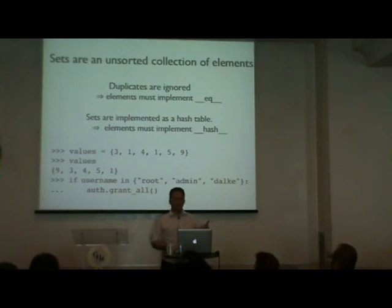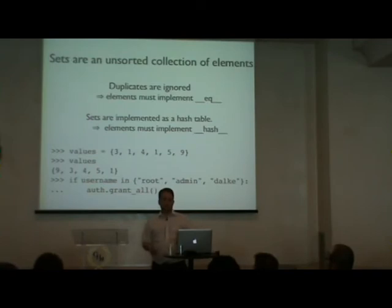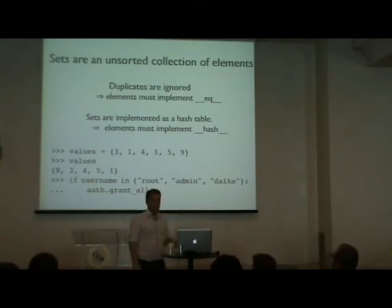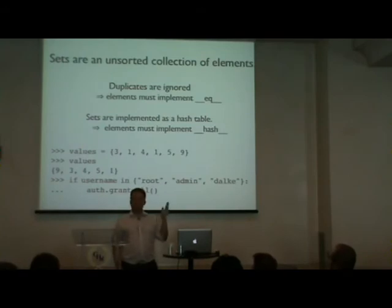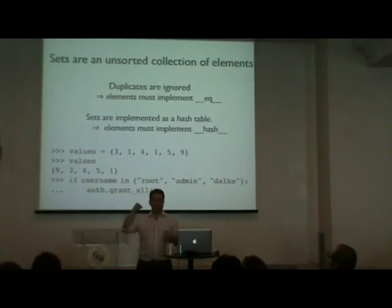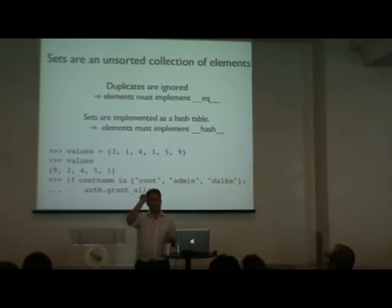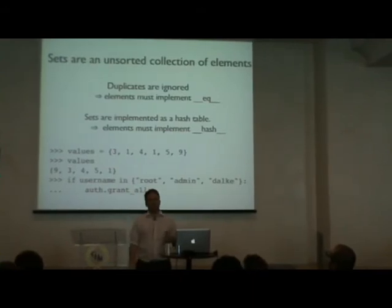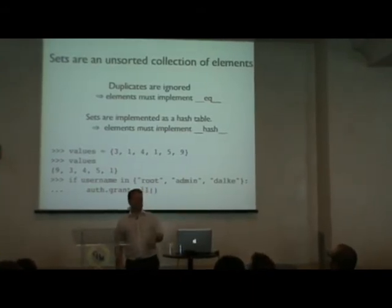Python also has hashable types. If your object implements __hash__ and __eq__, you can use it in a hash table. Sets are an unsorted collection where duplicates are ignored. Here I have the digits of pi — 3, 1, 4, 1, 5, 9 — and the result is a set with different ordering, and the duplicate 1 is no longer there because sets only keep unique elements.